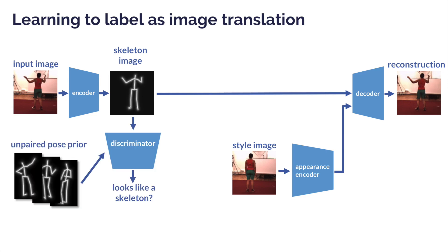The pose representation is enforced to follow the distribution of skeletons through a discriminator trained on an unpaired set of skeletons. While we can now learn an interpretable pose representation, we have lost the ability to predict skeleton keypoints directly. Further, the image representation can leak appearance information from the input image, which negatively affects the accuracy of predicted skeletons.